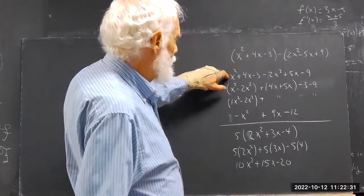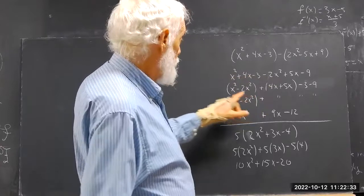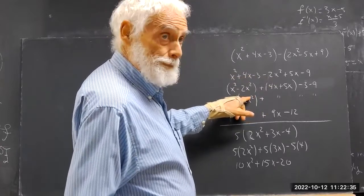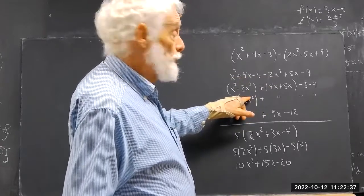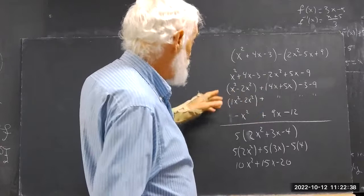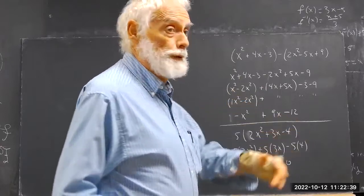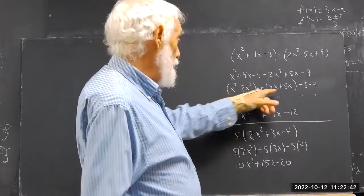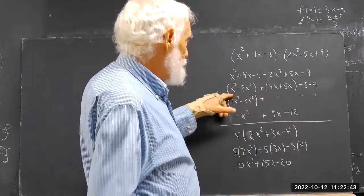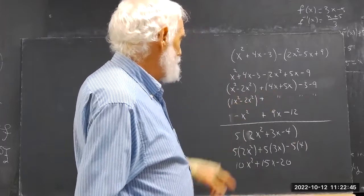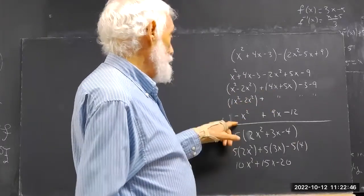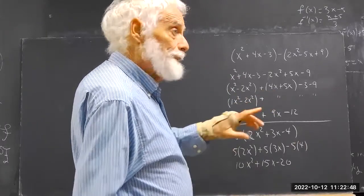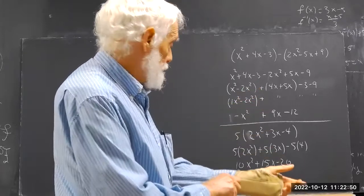I've got an x squared and a negative 2x squared gathered here. Formally what I do is I factor out the x squared and use the distributive law backwards to show that this has to be equal to negative x squared.